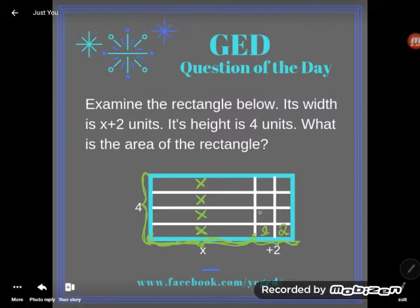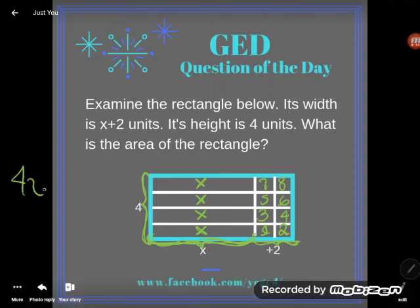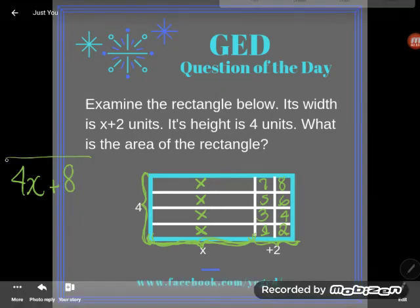Three, four, five, six, seven, eight. So there's eight little pieces. So I end up with the four X's and the eight little pieces. What's the area of this rectangle? It's four X plus eight.